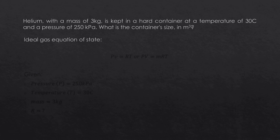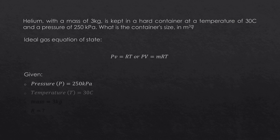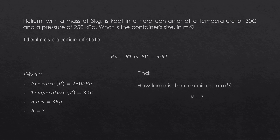Going back to our problem, using the ideal gas equation PV equals MRT. We have: pressure equals 250 kPa, temperature equals 30 degrees Celsius, and mass equals 3 kg. We are looking for the container size in cubic meters, which means we are solving for volume. Since we consider the mass of gas present, we use PV equals MRT. But first, we need to find the gas constant R.